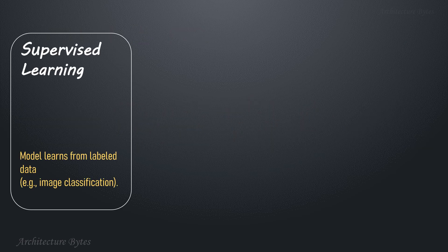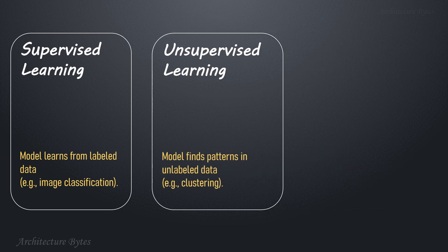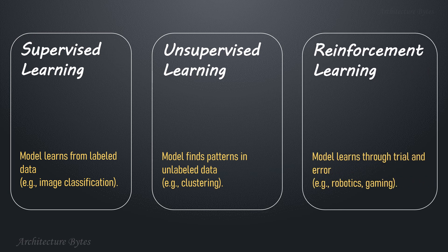Supervised learning: here the model learns from labeled data. Unsupervised learning: here the model finds patterns in unlabeled data. Reinforcement learning: model learns through trial and error.